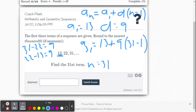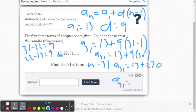So now we get a_31 equals 13 plus 9 times 30. Then we get a_31 equals 13 plus 270. Order of operations: do multiplication before addition. And so a_31 equals 283.